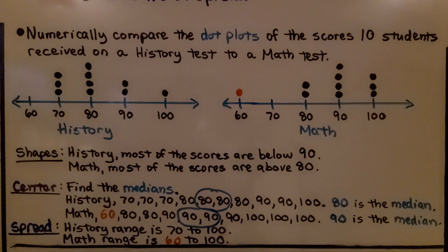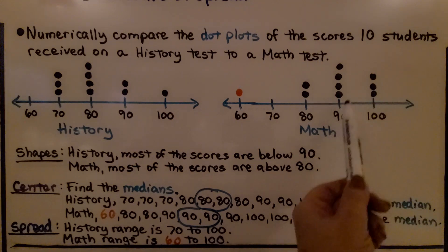Here it's telling us to numerically compare the dot plots of the scores 10 students received on a history test to a math test. For the shapes, history, well, most of the scores are below 90. And for math, most of the scores are above 80.